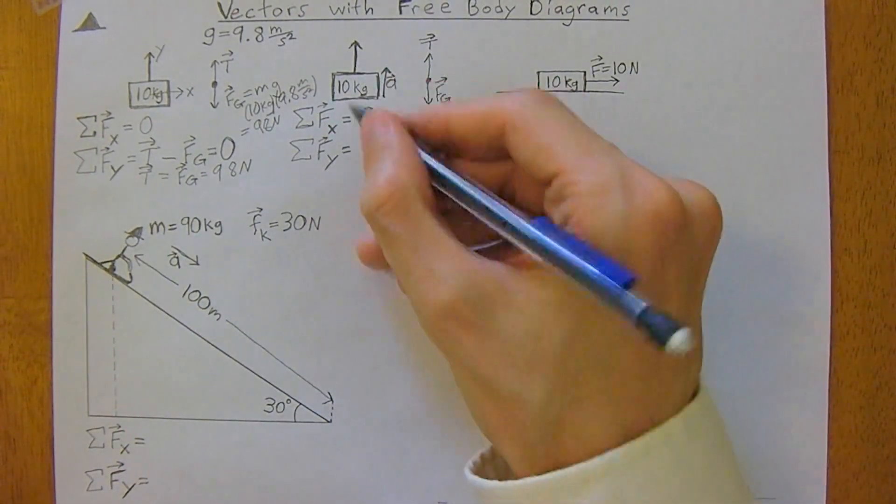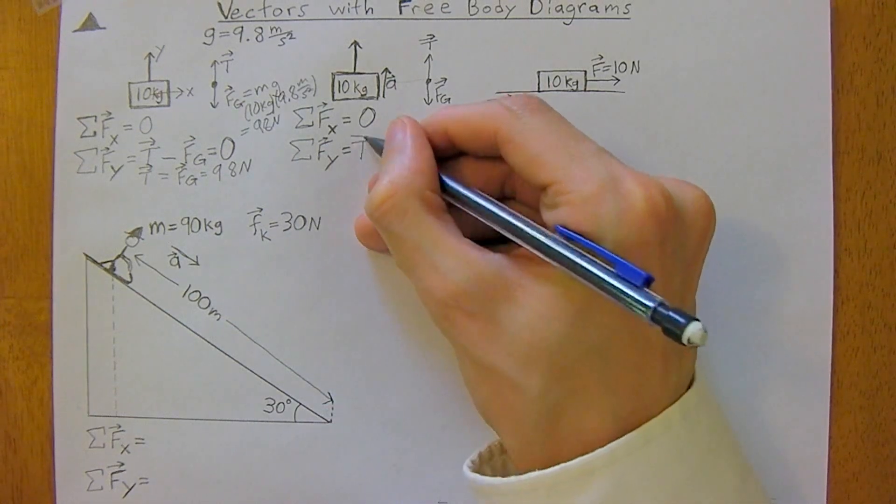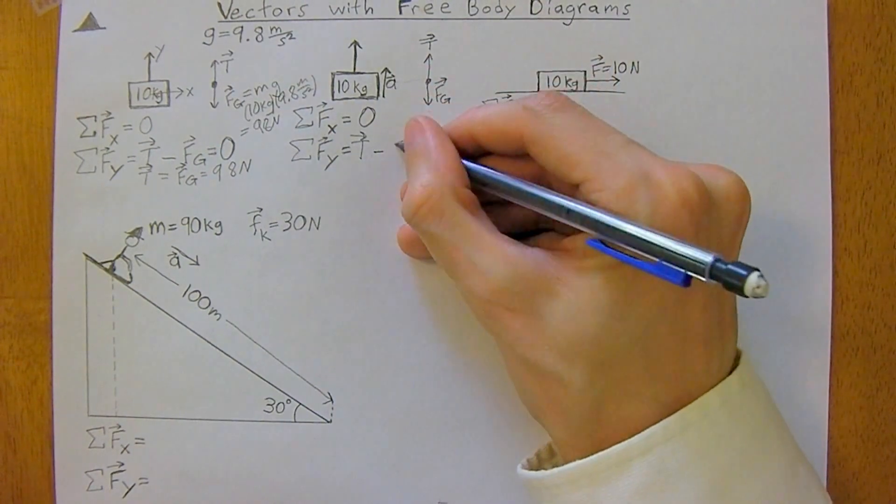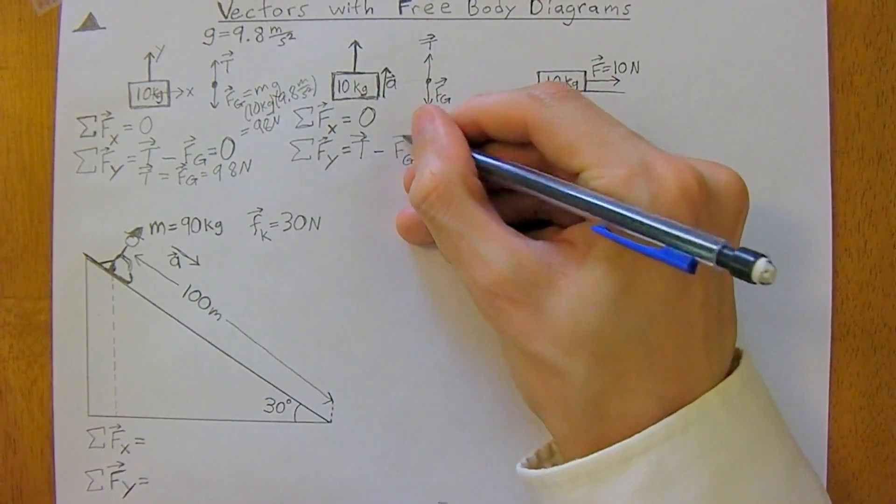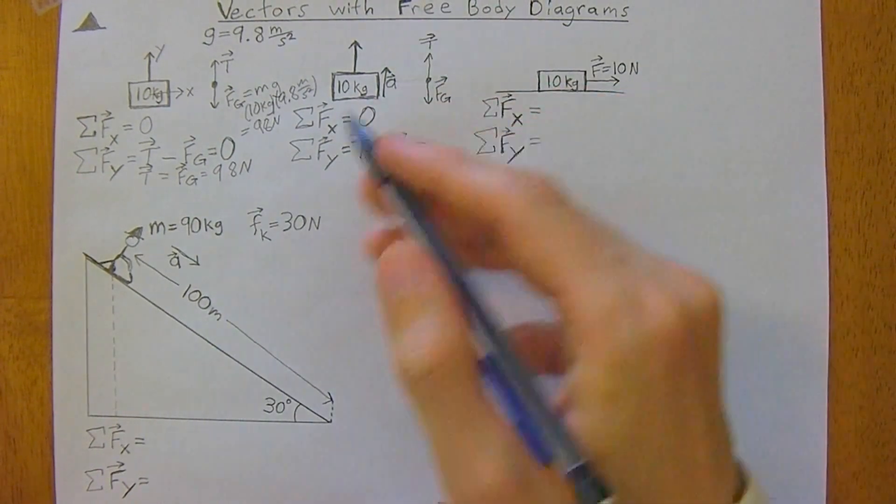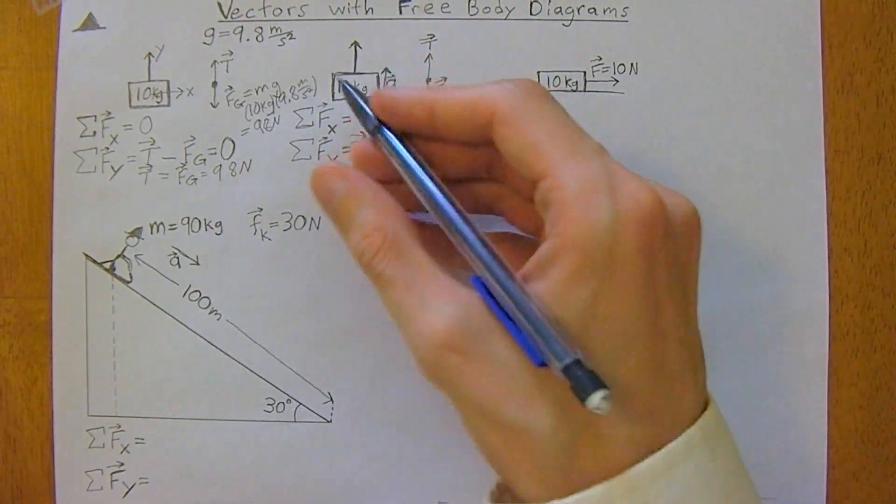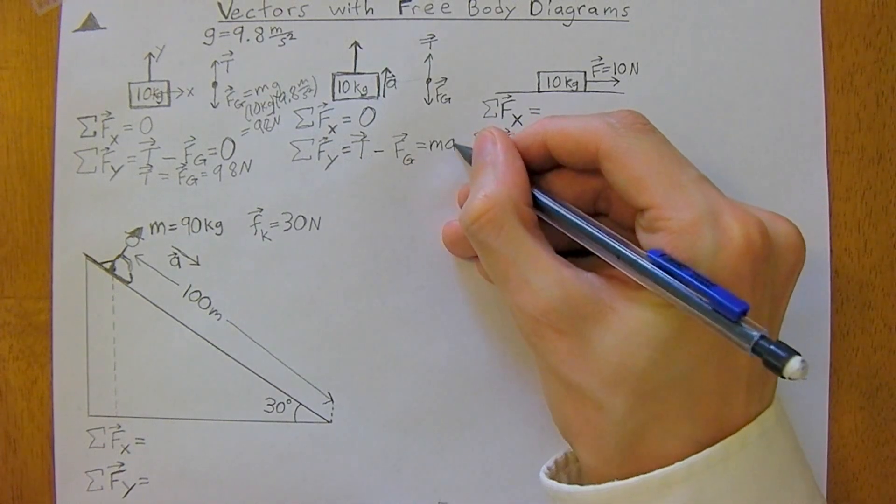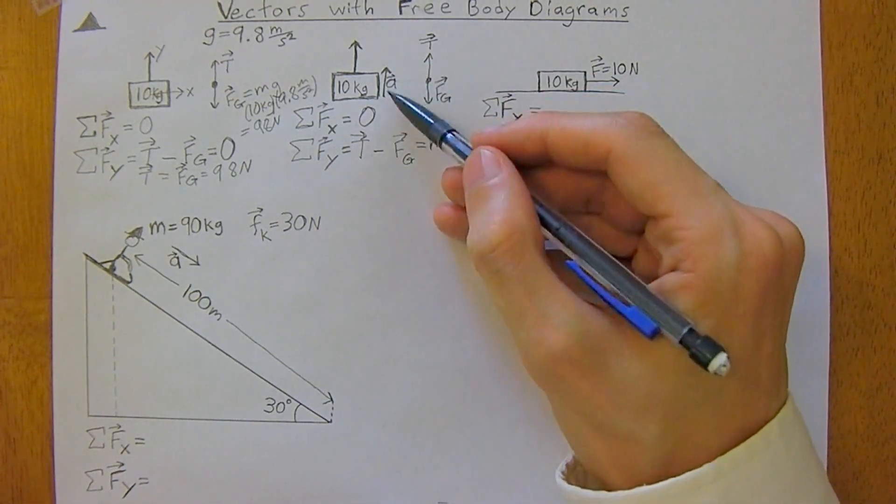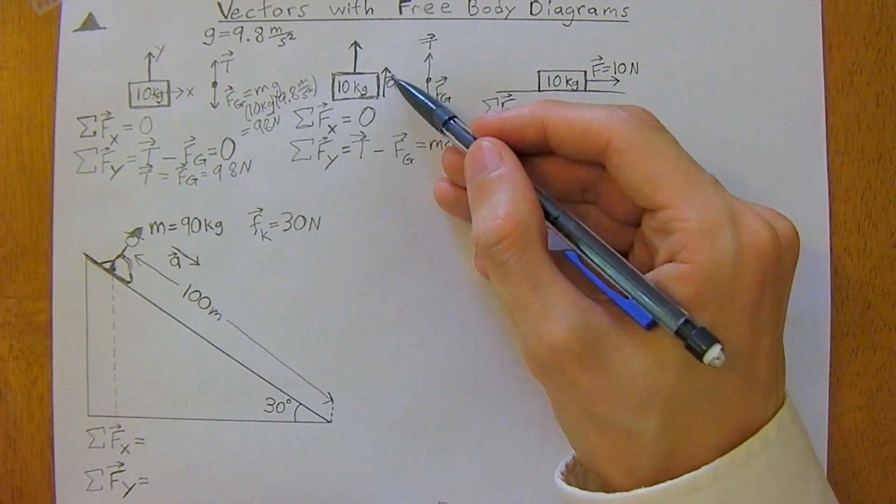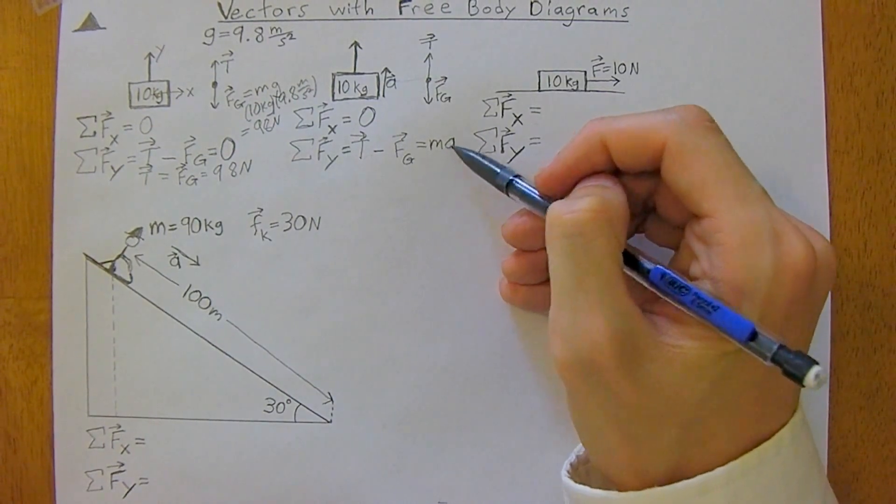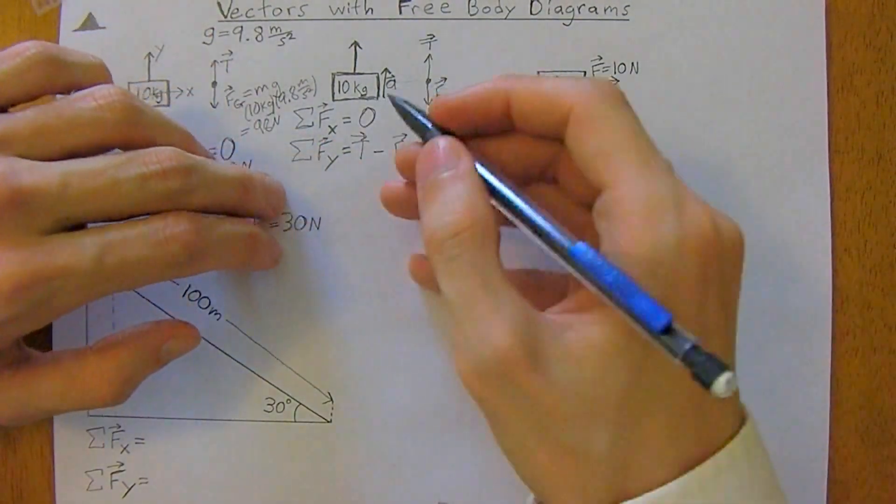But we do have, same as last time, tension positive, since it's going up, minus the force of gravity, since it's going down. And now, here it was equal to zero, but now it's going to be equal to mass times acceleration. And our acceleration is positive because it's going up in the y-axis. If acceleration was going down, we would have a negative acceleration on this side.